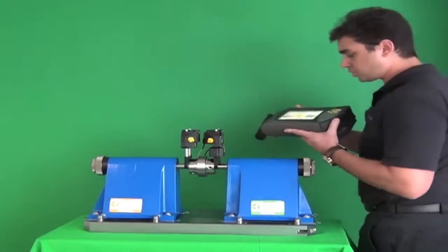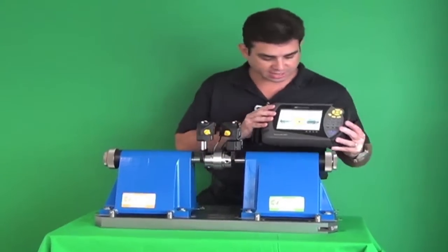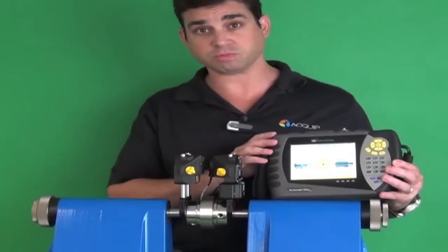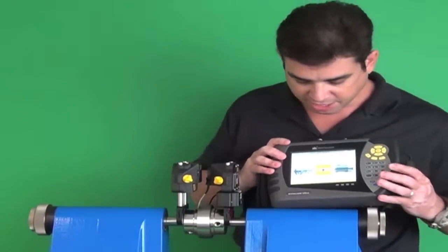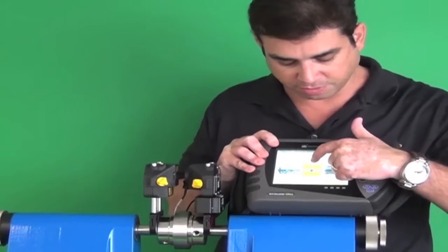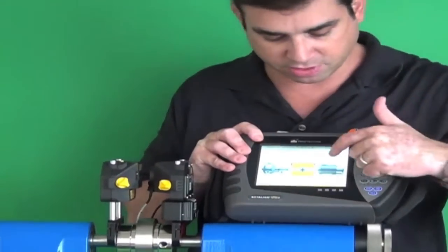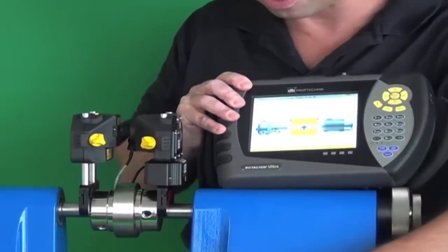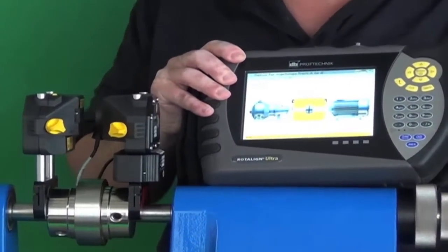So the first thing that we do when we take laser alignment readings on any tool, but especially with the Rotoline Ultra, is we dimension out the system. We put our dimension in from the center of the coupling to the receiver, the center of the coupling to the front foot, and then the front foot to the back foot.